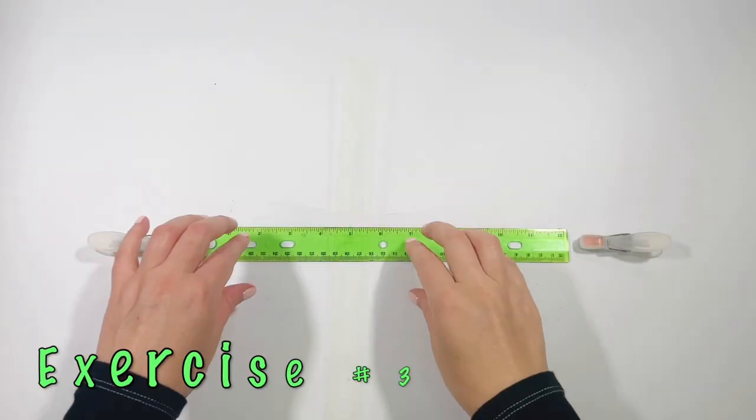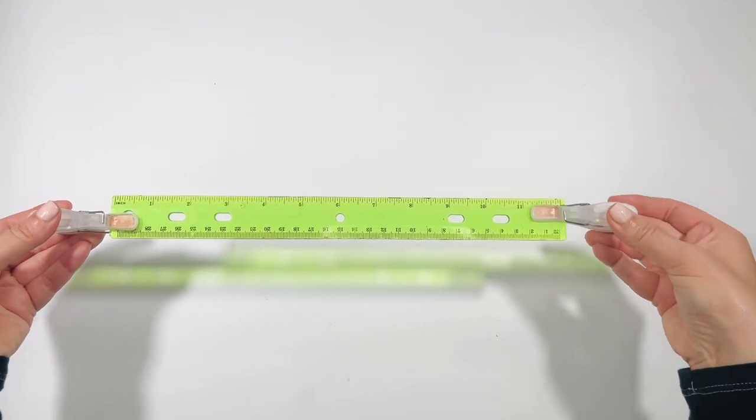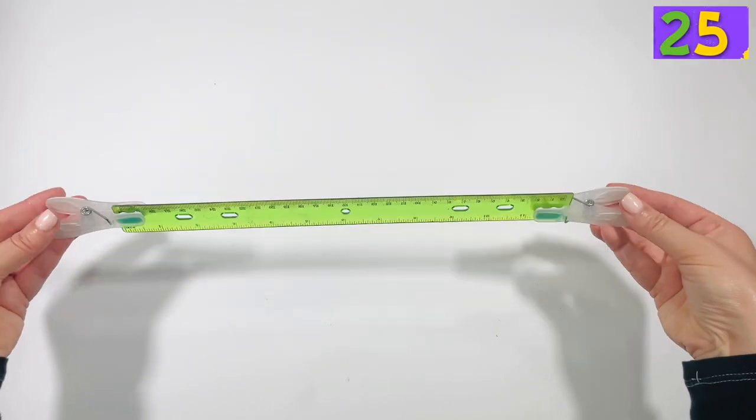Exercise number three. Clip the cloth pins on either side of the ruler and make it turn. Begin!